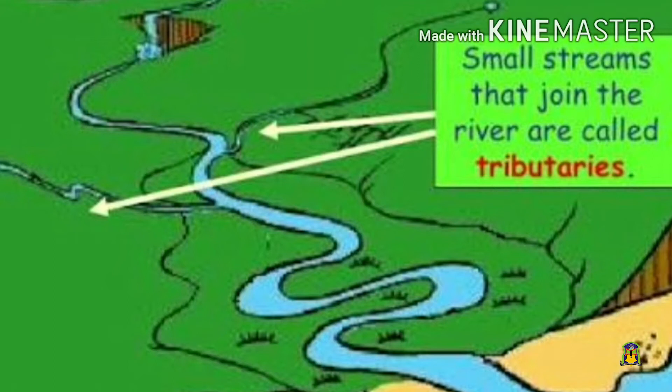Rivers that join the main river — whether in hills or plains — are known as tributaries.